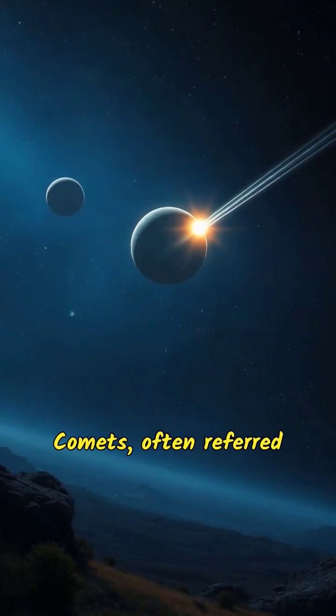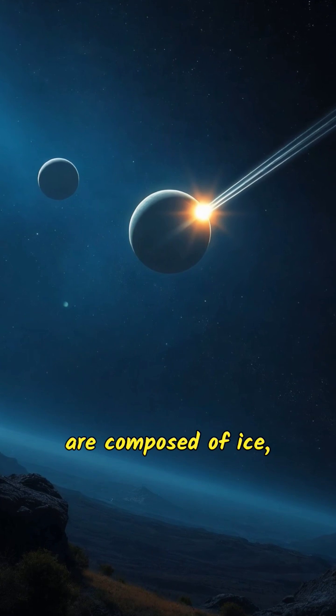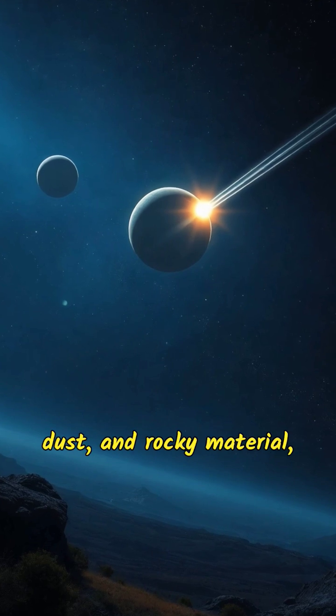Comets, often referred to as dirty snowballs, are composed of ice, dust and rocky material, with tails that brighten as they approach the sun.